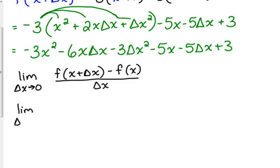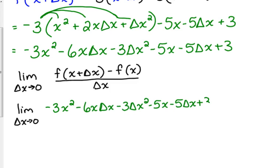The work that I have there in green is the f plus delta x part. So, the limit as delta x approaches zero of, negative 3x squared, minus 6x delta x, minus 3 delta x squared, minus 5x, minus 5 delta x, plus 3. Yeah, these get a little long, but polynomials are the only ones that do.